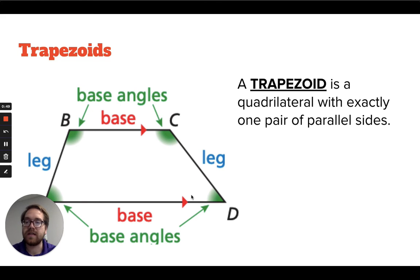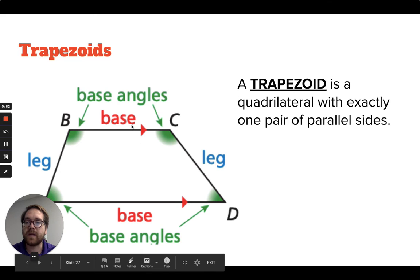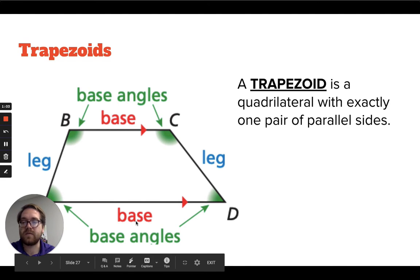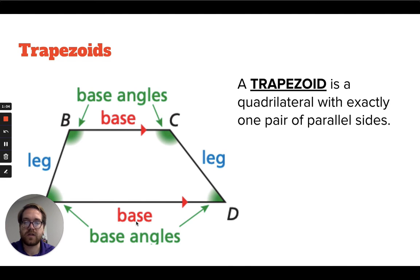You can see in this image that the top side and the bottom side are parallel to each other, and then the legs are not parallel to each other. The top and bottom sides are called bases, and the sides are called legs. The bases will be parallel to each other.